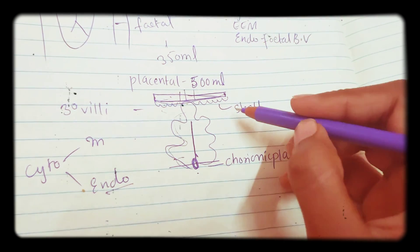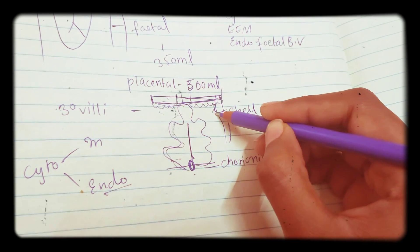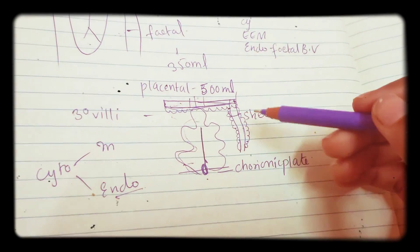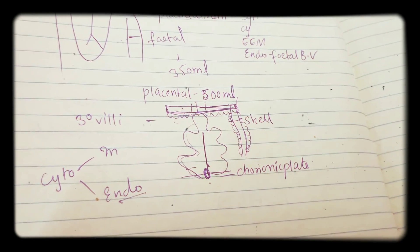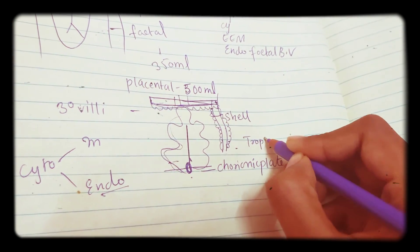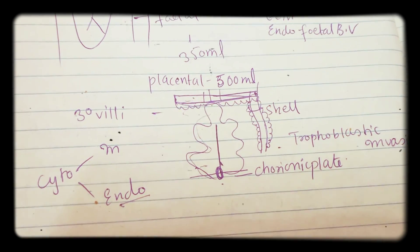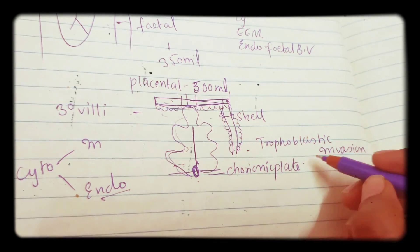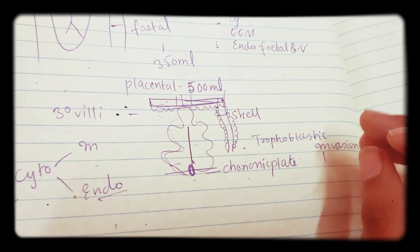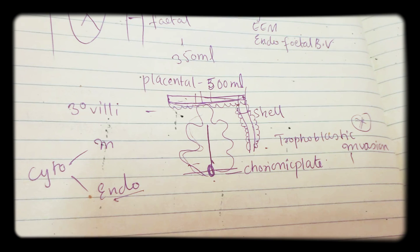The endovascular cytotrophoblast surrounds the maternal spiral arteries in the intervillus space and converts them from high-resistance to low-resistance vessels. This process is called trophoblastic invasion. If trophoblastic invasion does not happen, it can lead to uteroplacental insufficiency, IUGR, PIH, preeclampsia, and a smaller placenta.